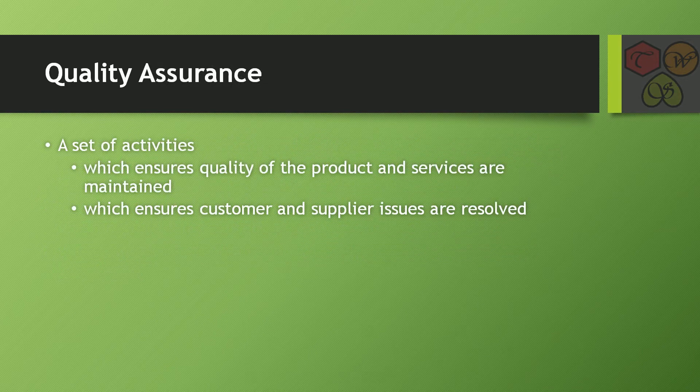Quality assurance is a set of activities which ensures the quality of products and services are maintained. It also ensures customer and supplier issues are resolved. By ensuring the quality of products and services are maintained and by resolving customer and supplier issues, quality can be assured.